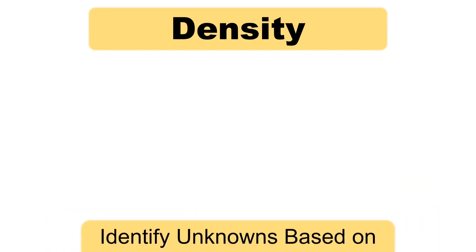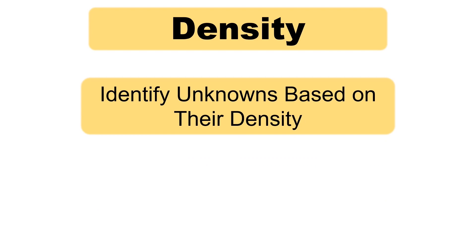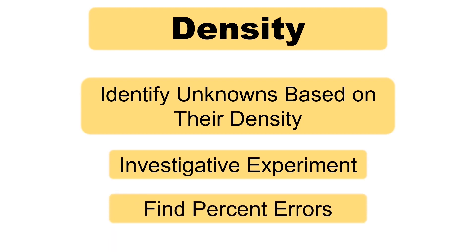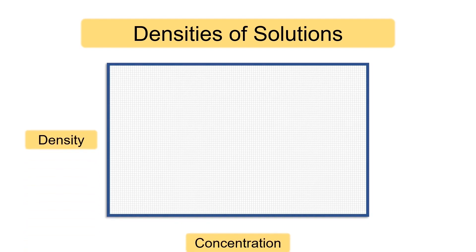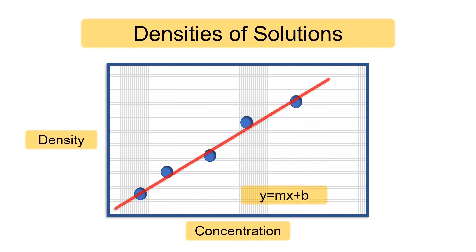Second, you'll actually identify unknowns based on their density, which means this is our first investigative experiment, and we'll find percent errors in our measurements. And third, in the final part of this lab, you'll find densities of solutions and create a standard calibration curve to find concentrations of other unknown solutions.